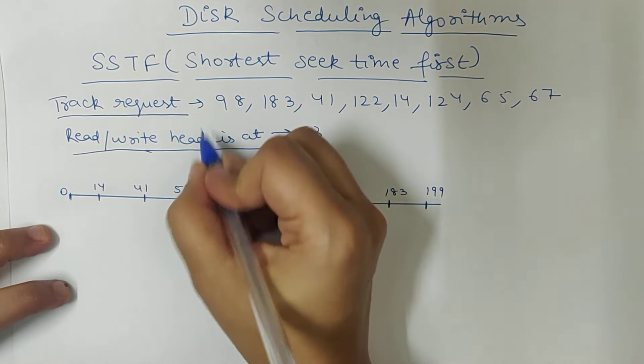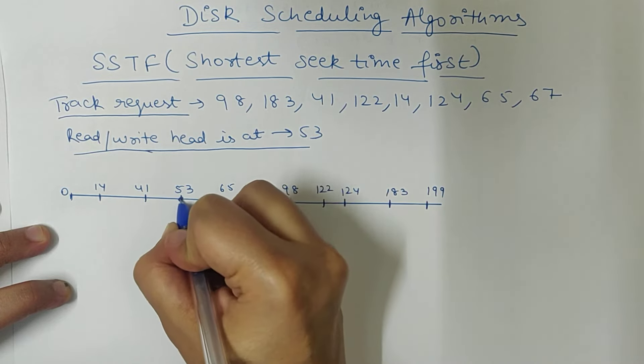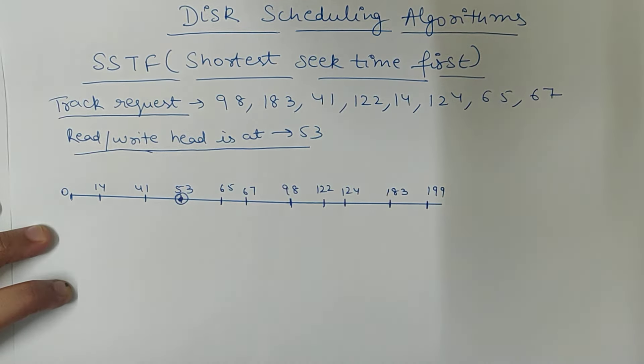Currently, these two things are given. This is a track request, this is 53. Now, currently, our track read write head is at 53.